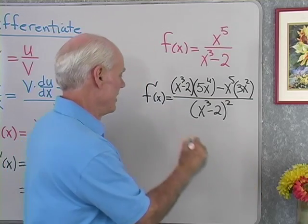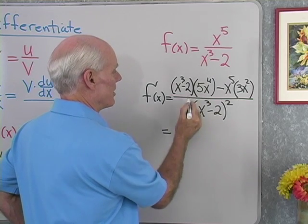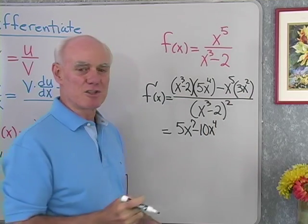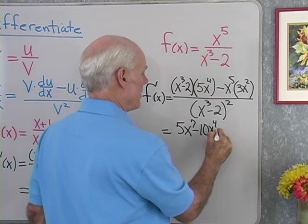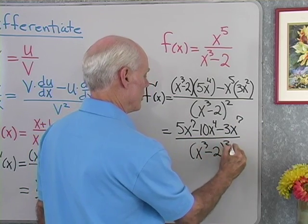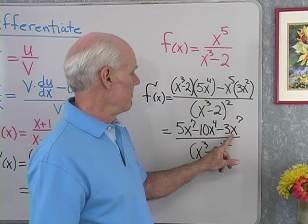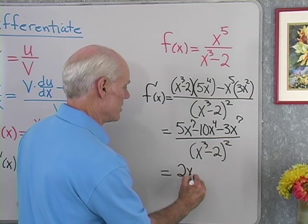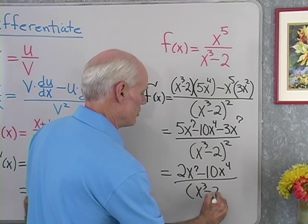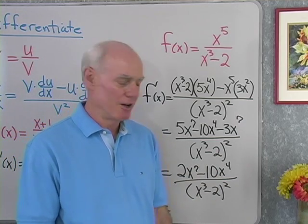The rest is just algebra — I have to simplify this. x cubed times 5x to the fourth gives me 5x to the seventh; negative 2 times 5x to the fourth gives minus 10x to the fourth; x to the fifth times 3x squared gives minus 3x to the seventh; all divided by x cubed minus 2 quantity squared. So 5x to the seventh minus 3x to the seventh gives 2x to the seventh, minus 10x to the fourth, all divided by x cubed minus 2 quantity squared. I'll leave it like that since there are no common factors in the numerator and denominator.